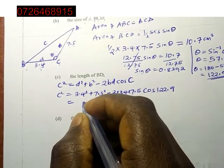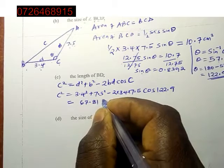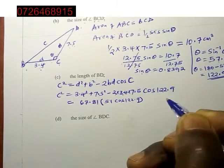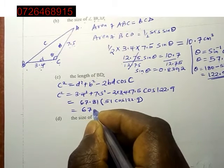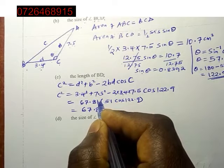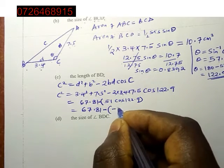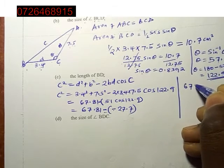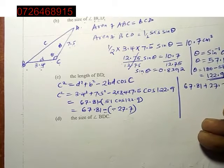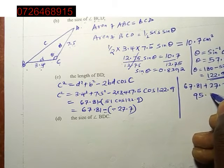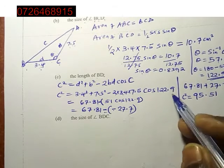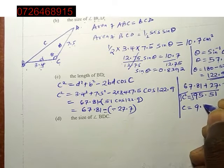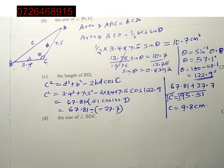plus b, 7.5 squared, minus 2 times 3.4 times 7.5 cos 122.9. This equals 67.81 plus 51 cos 122.9. This is 67.81, oh sorry there was a subtraction here, so minus into minus, which is negative 27.7. A negative times a negative is positive, so we have 67.81 plus 27.7 and this gives us 95.51. So c squared equals 95.51, but we want c, so we find the square root both sides and c equals 9.8 centimeters.